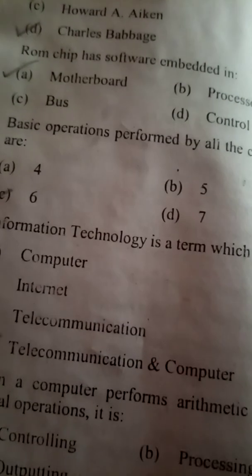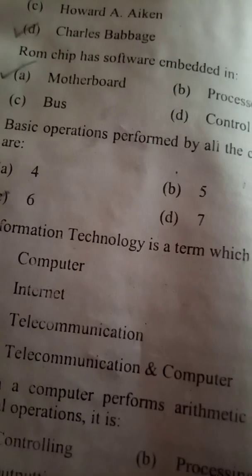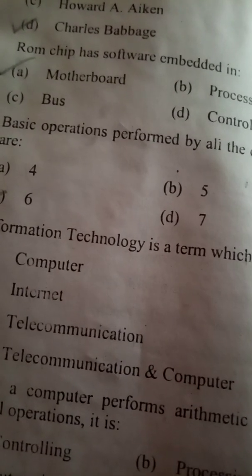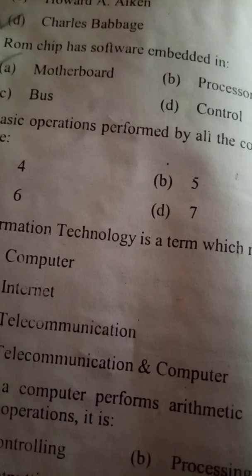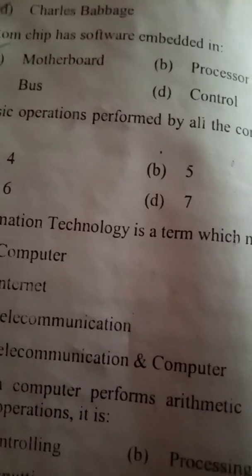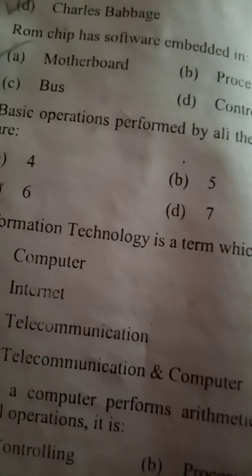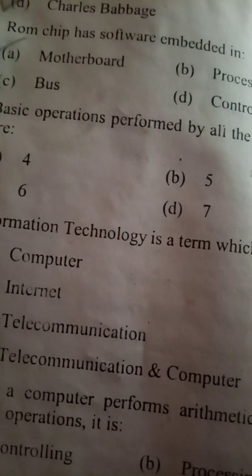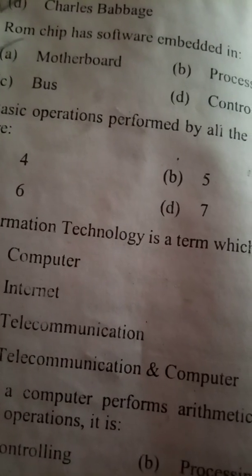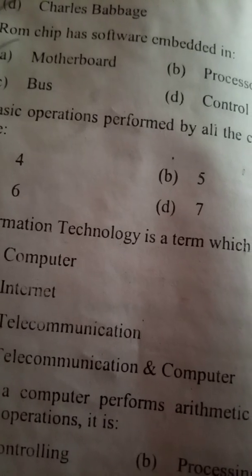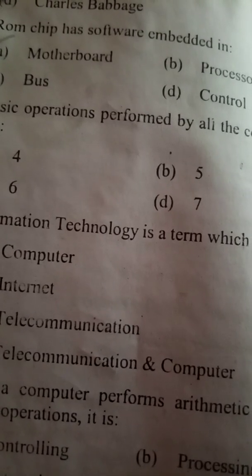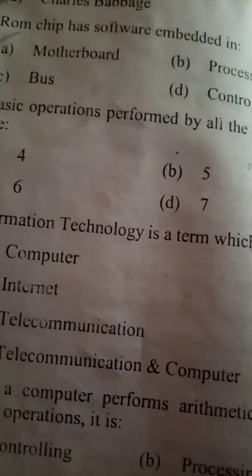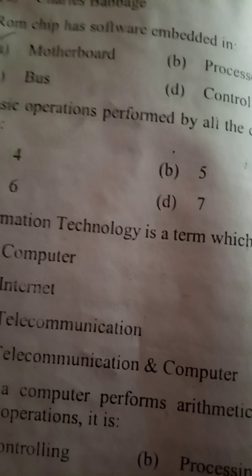The physical part related to random access memory is RAM. ROM is the software of the computer stored on the motherboard, where basic operations are performed for all the computer system.